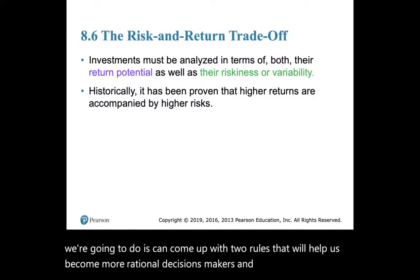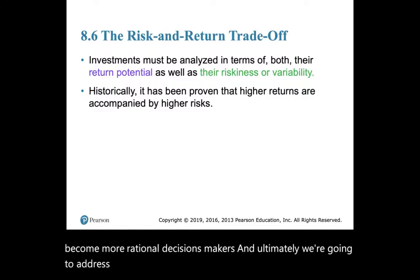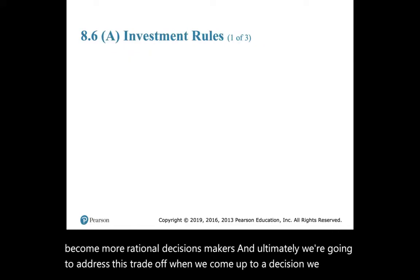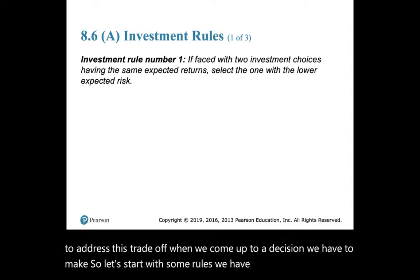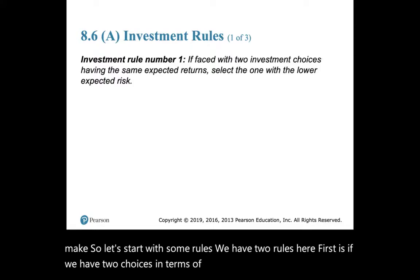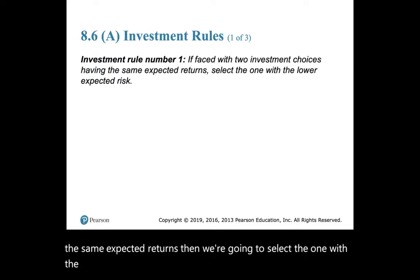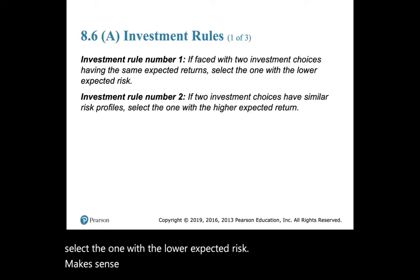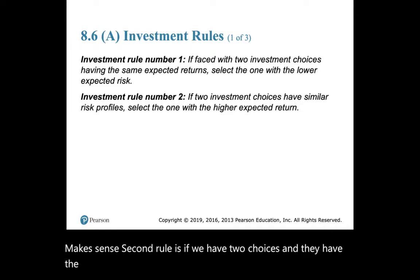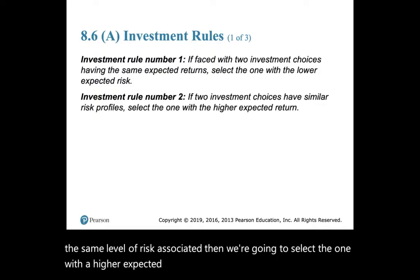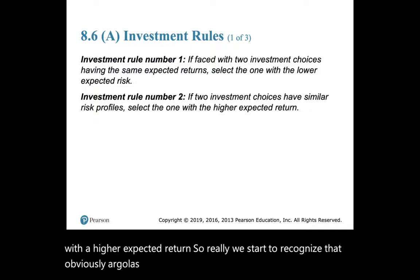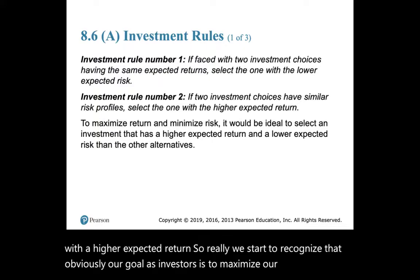Here are our two investment rules. First: if we have two choices with the same expected returns, we select the one with the lower risk. Second: if we have two choices with the same level of risk, we select the one with the higher expected return. Our goal as investors is to maximize return and minimize risk.